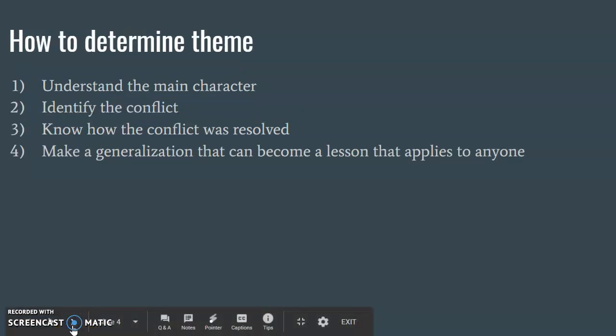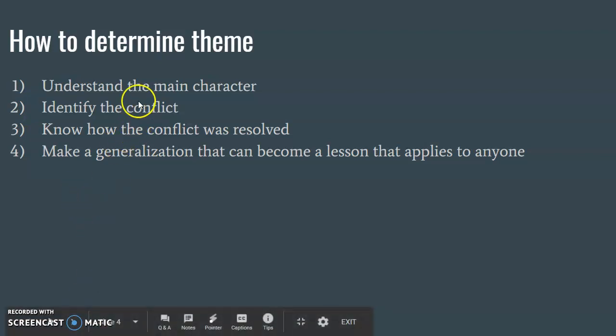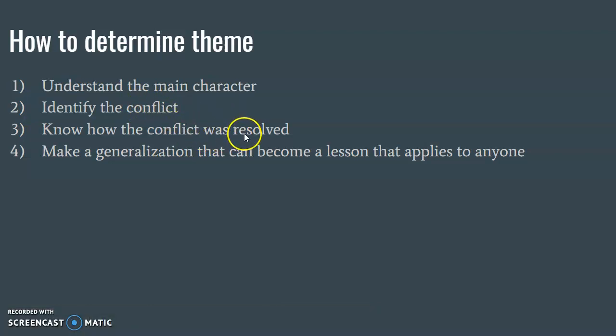So how are you going to go about determining the theme? First, you need to understand the main character in the story. Is that person somebody you want to identify with, somebody you want to become more like, or is it someone you want to be different from because they've made terrible choices? Then you're going to identify the conflict in the story, and from there you need to know how that conflict was resolved. Finally, you can put all that together to make a general statement about what lesson can be applied to anybody based upon what that character went through in that conflict.